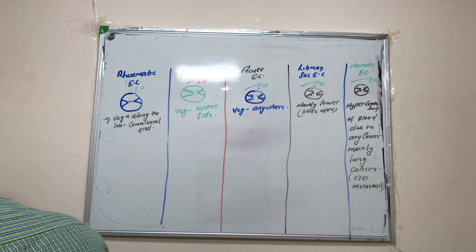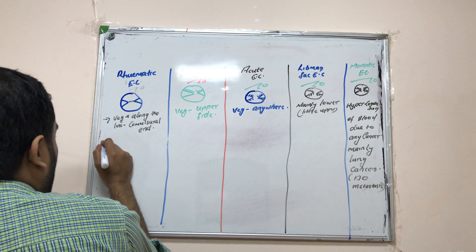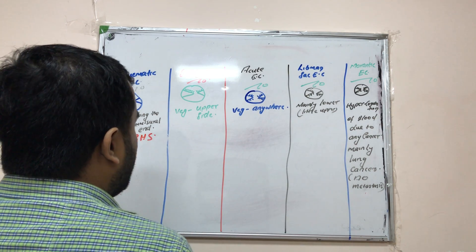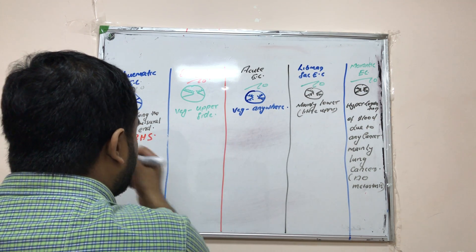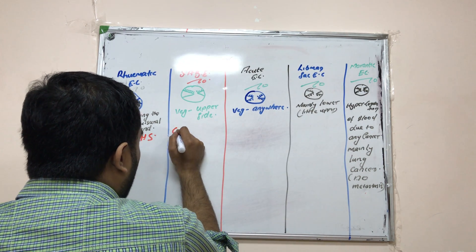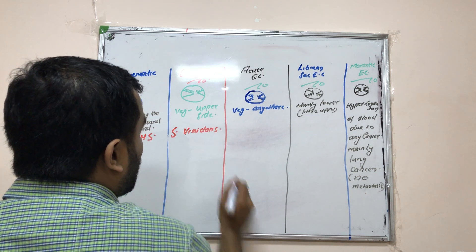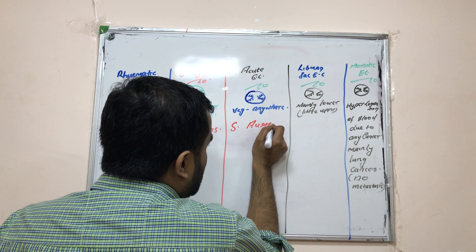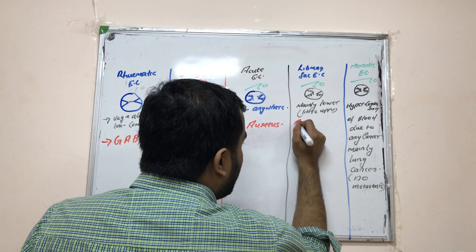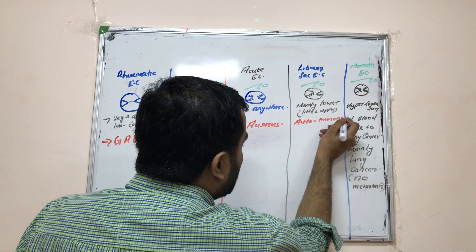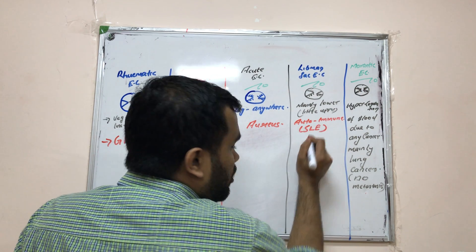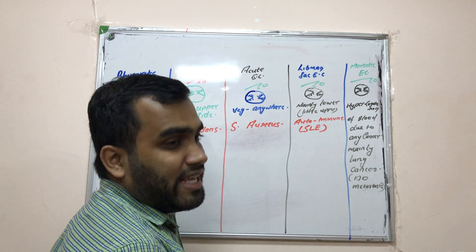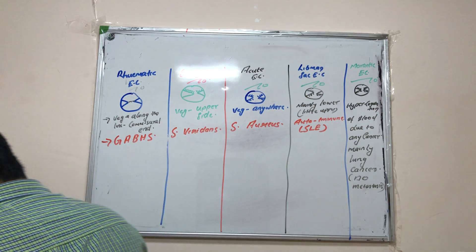Rheumatic endocarditis is caused by Group A beta-hemolytic Streptococcus (GBHS). Subacute bacterial endocarditis is caused by Streptococcus viridans. Acute endocarditis is caused by Staphylococcus aureus. Libman-Sacks endocarditis is an autoimmune disorder associated with SLE — systemic lupus erythematosus — a kidney disease involving the renal lobe. So Libman-Sacks endocarditis is seen in SLE patients.